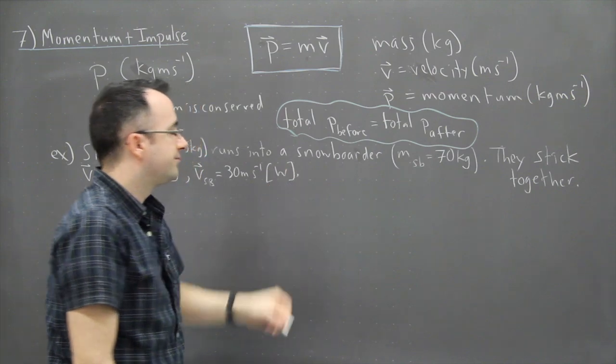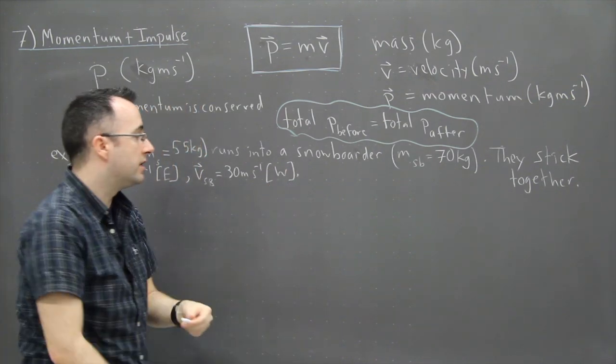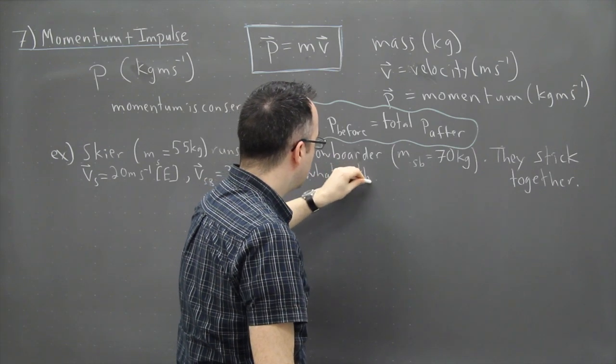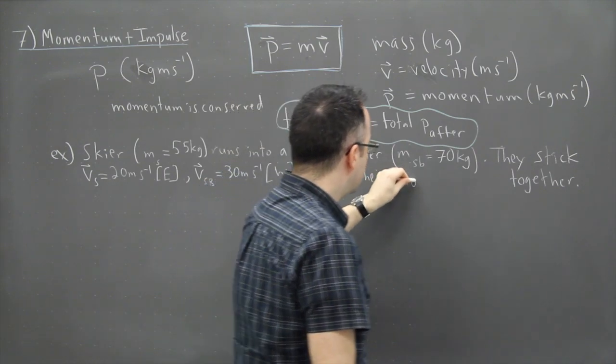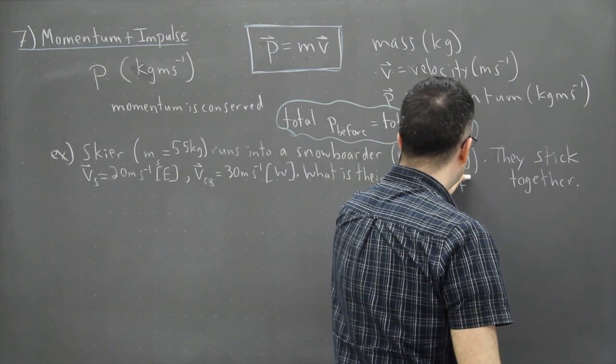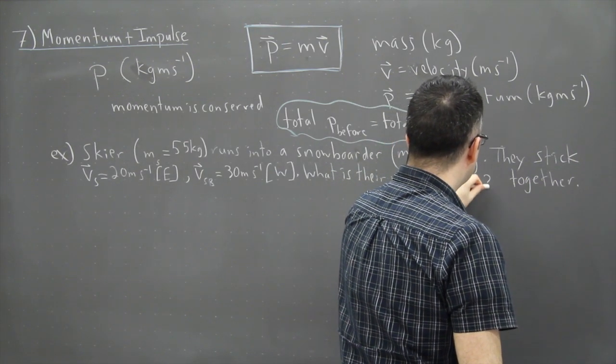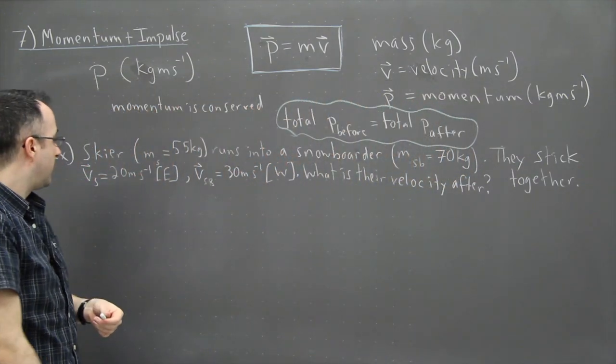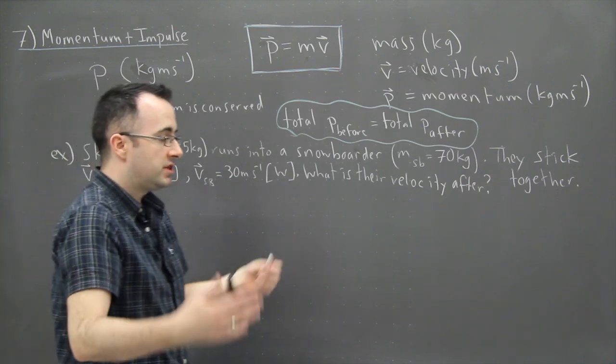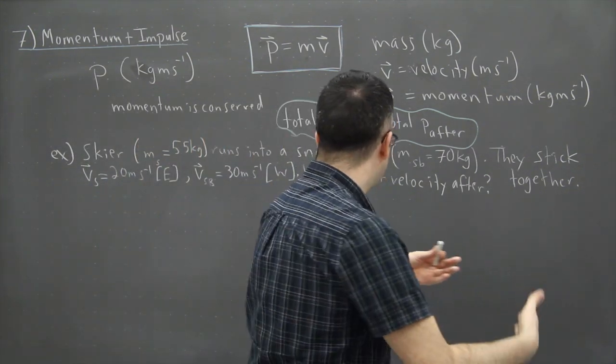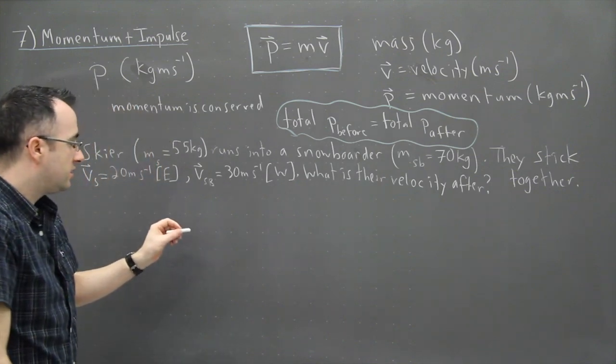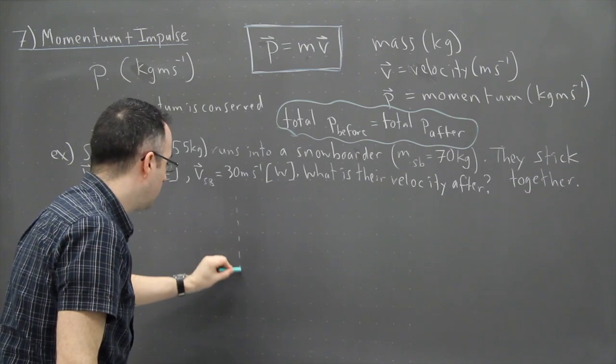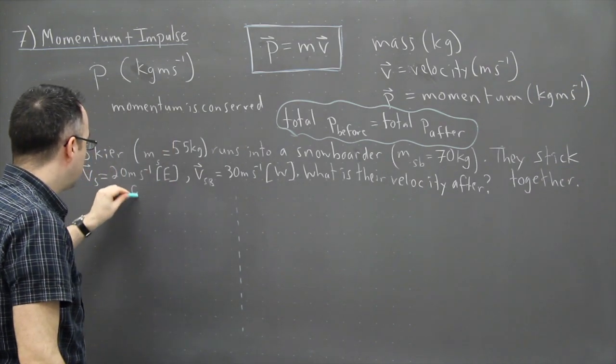The question is, how fast will they go after they run into each other? So what is their velocity after the collision? So what I like to do in a situation like this where we have two things running into each other is first of all maybe try to understand the situation here. And what I like to do is actually put a big line across what I'm doing and consider that sort of before and after.